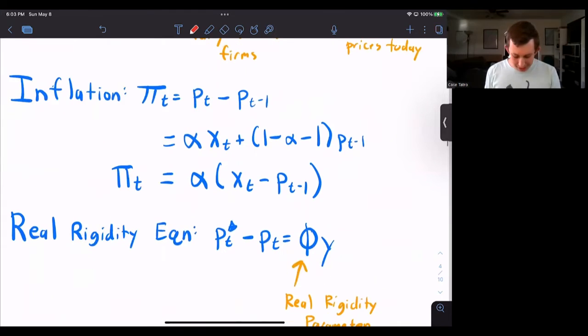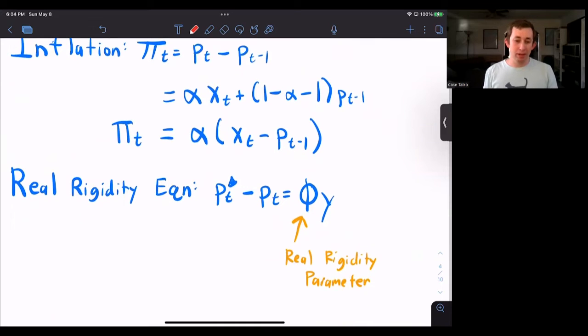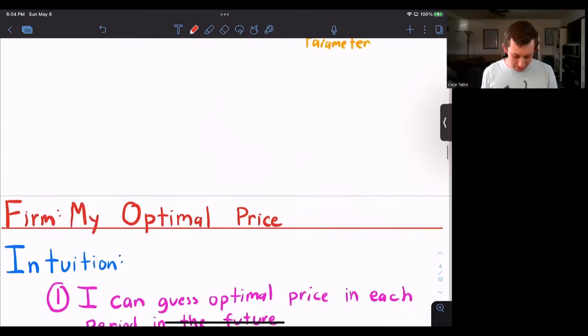We also have the real rigidity equation, which says that the optimal price minus the actual price is equal to some parameter of Y, which is the real rigidity parameter. I talk more about the real rigidity parameter in a separate video. Feel free to check that out. Otherwise we're just going to keep going.